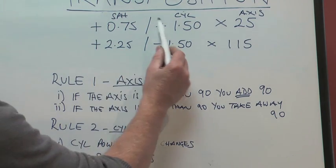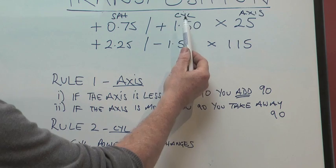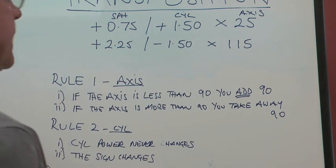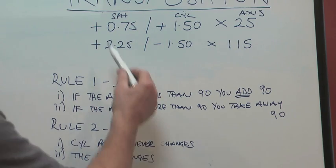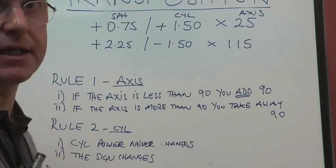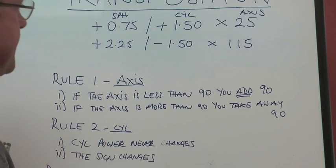If those were both minus, you would still end up with adding those two numbers together, and you would end up with minus 2.25. But in the case where the signs are different, you have to take the smaller number from the bigger number, and then use the sign of the bigger number.